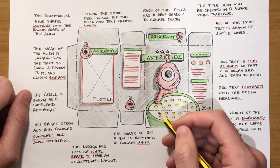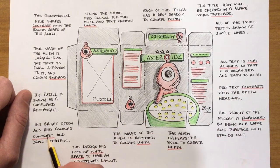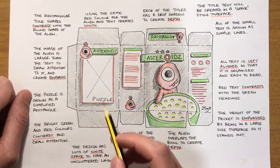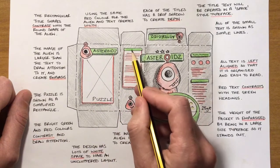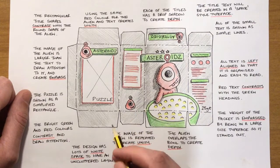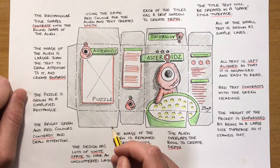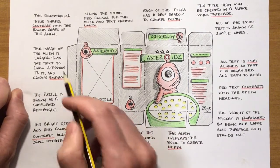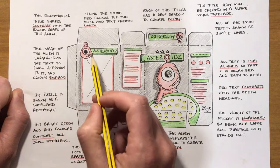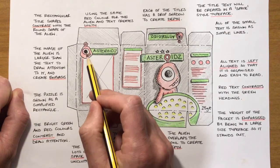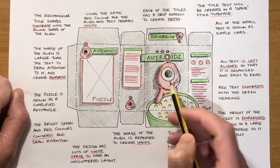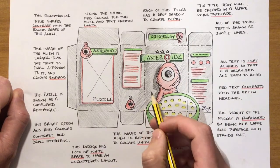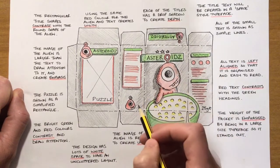Moving back to contrast, my bright green and red colors contrast and draw attention to different parts, so you can see the difference between the titles and the little bits of written information. The alien image is larger than the text to draw attention — that's creating emphasis. By the alien being bigger than the title each time, it draws attention to the little graphic first and then you read the text.